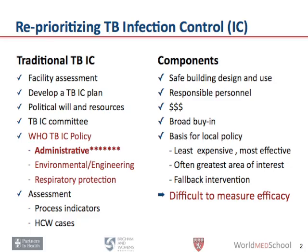Here you see traditional tuberculosis infection control. I'm going to be focusing on the three main hierarchies of TB infection control: administrative controls, environmental and engineering controls, and respiratory protection, shown on the left.